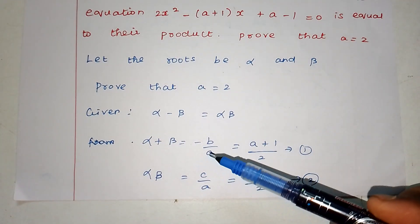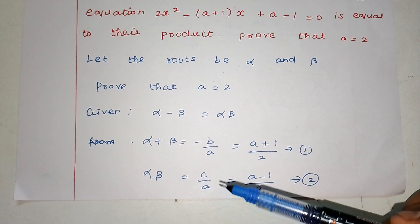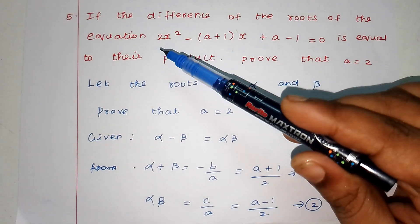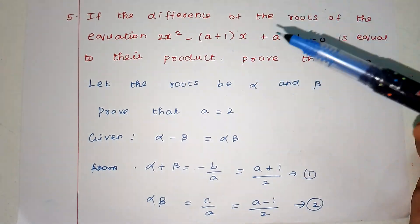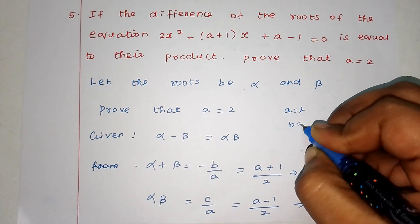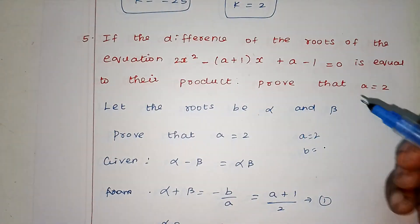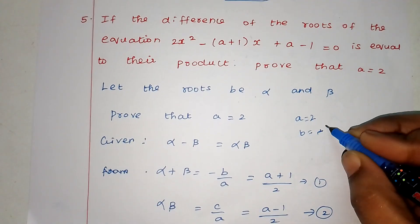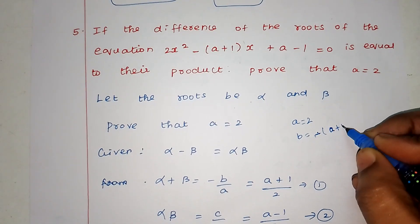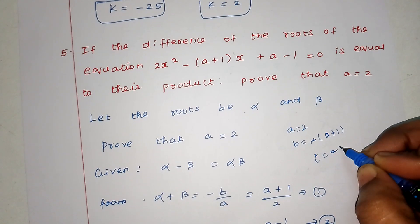Alpha plus beta formula is minus B by A. Alpha into beta value is C by A. So, comparing with the given equation: A is 2, B is minus (a+1), and C is (a-1).